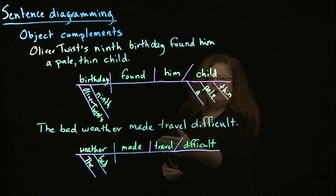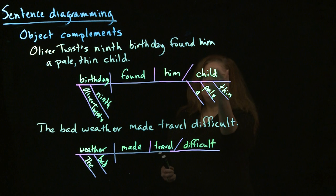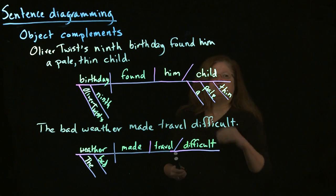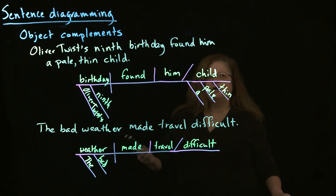And so, that's where we say, if we're describing the object or renaming the object, we have an object complement. We tilt the line toward the back end of the sentence, where the object usually is.